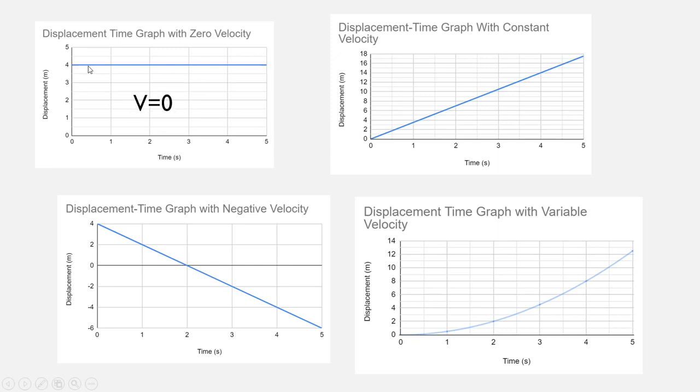So if you ever see a flat line on a displacement-time graph, you should immediately know that the velocity is zero.